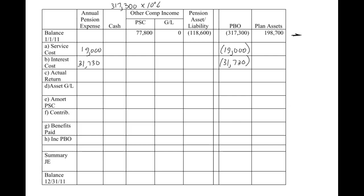Actual return is given. Remember, actual return is a good thing — it reduces our pension expense. That is given to us by our trustee, meaning the plan assets are being invested and earning a return, so that increases our plan assets. So here's one of our new items — the asset gain or loss. If you look back in the fifth video, we actually calculated that, and that number was 4,130. So we have this new column — the OCI gain or loss column — and that's going to be 4,130.